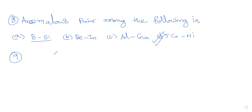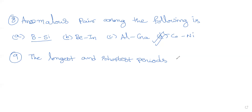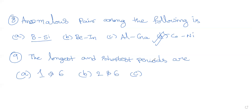Question 9: The longest and shortest periods are — think about what could be the answer. The right answer is six and one.